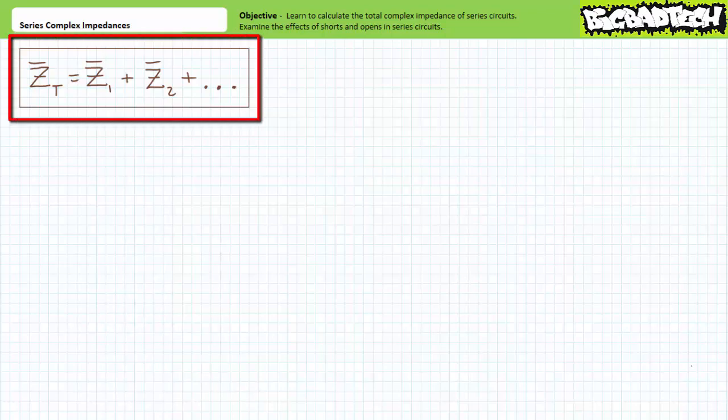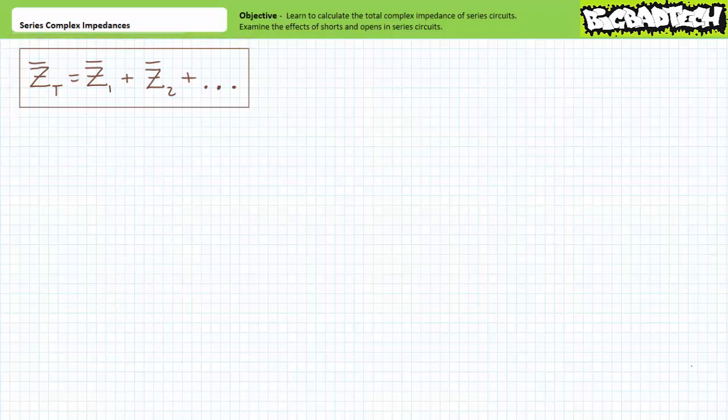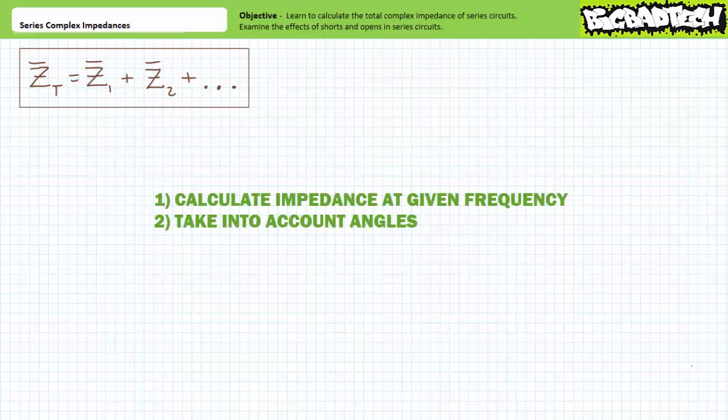Complex impedances in series or inline arrangements add up. You don't need a formula to remember this fact, although you do need to take into account two additional rules when dealing with complex impedances. One, you need to calculate the complex impedance of elements comprising the series relationship at that specific frequency. And two, one must take into account the angles of those complex impedances comprising the series relationship during the addition process. Long story short, direction matters, and if you forget this fact, you will fail.